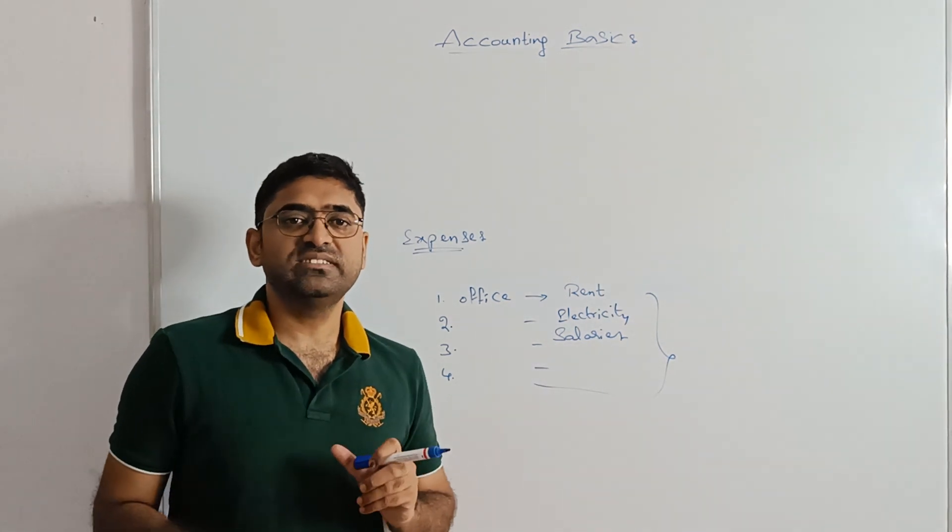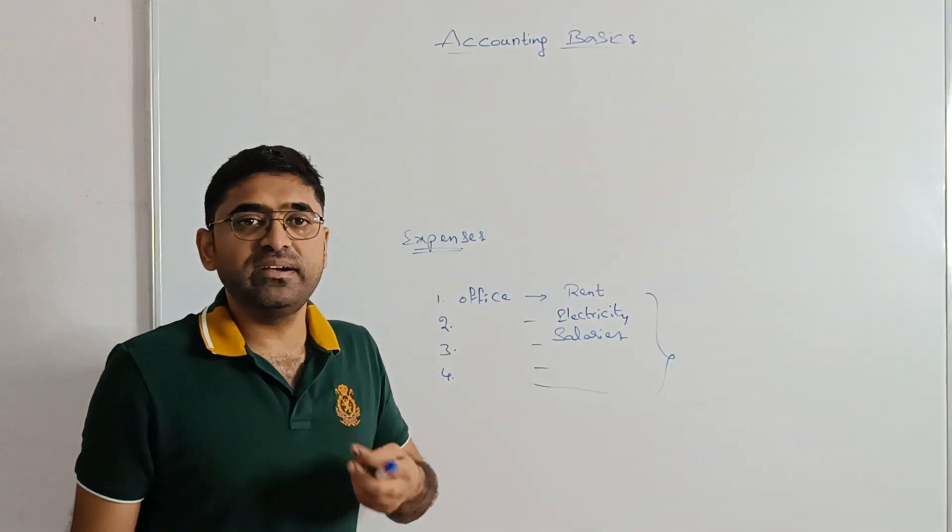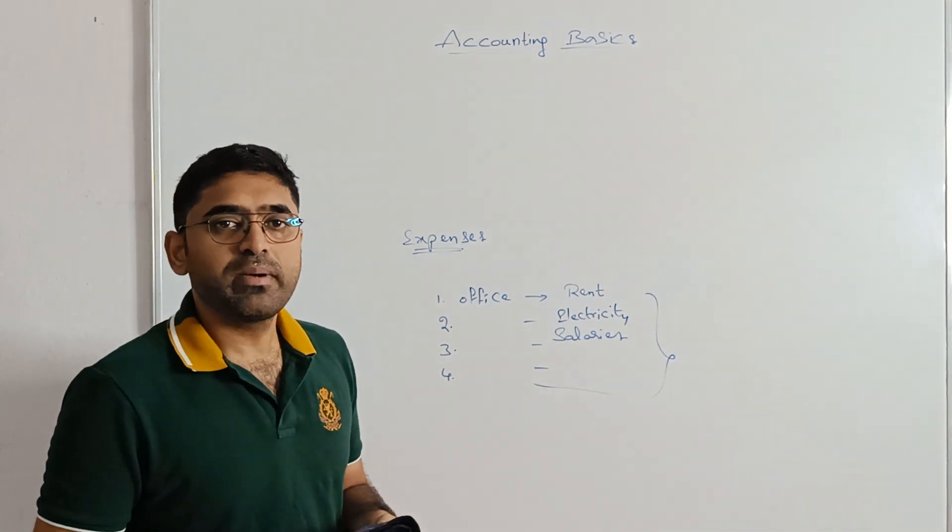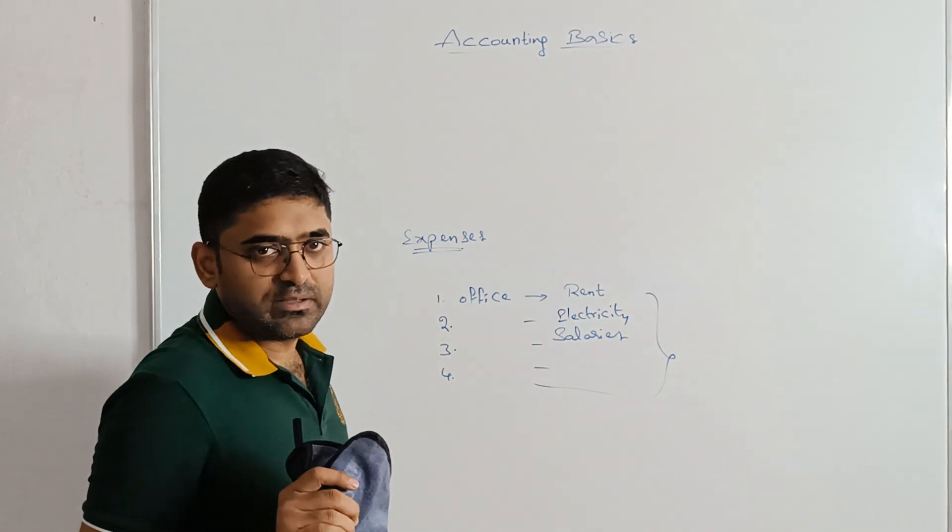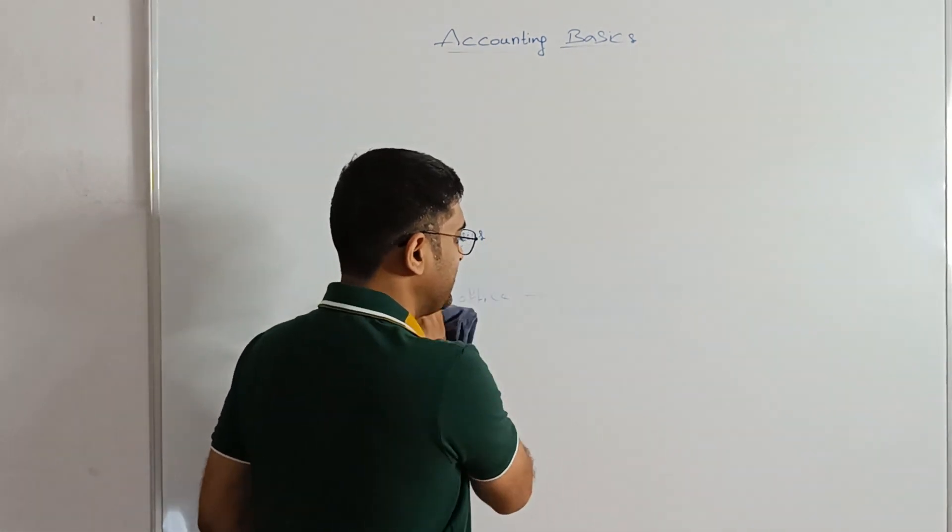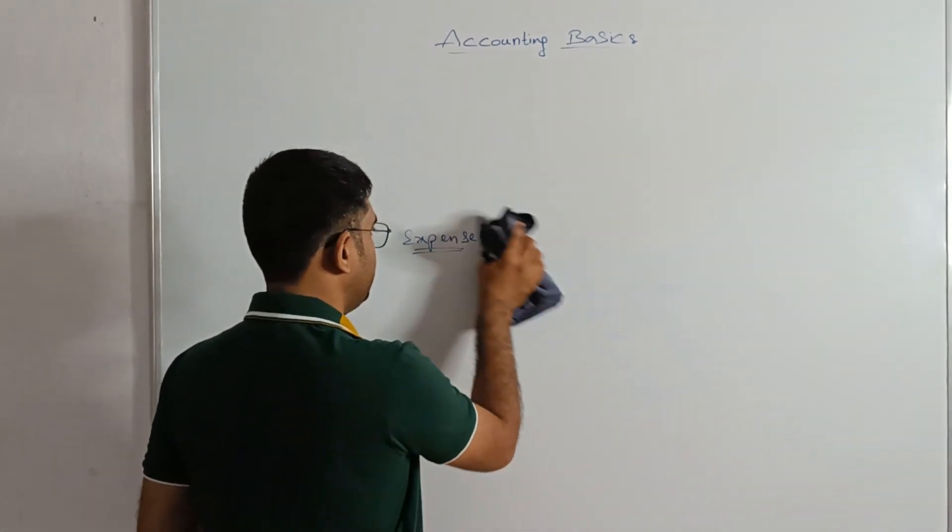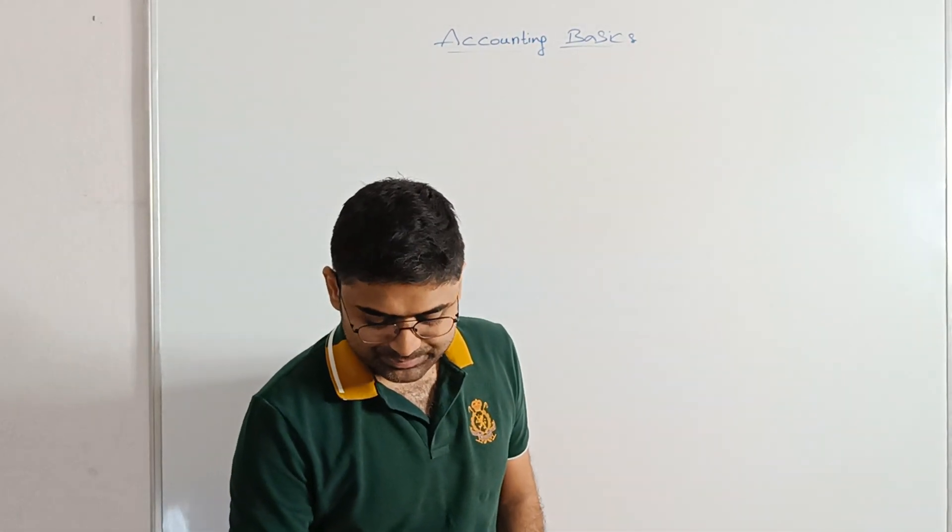If the amount spent is regarding the business then only call it as expenditure. Suppose in my office I spent some personal expenditure. Like I paid my daughter's school fees from my business account. Then it is not considered as expense. Because expense should be relating to the business. Not other. Make sense?